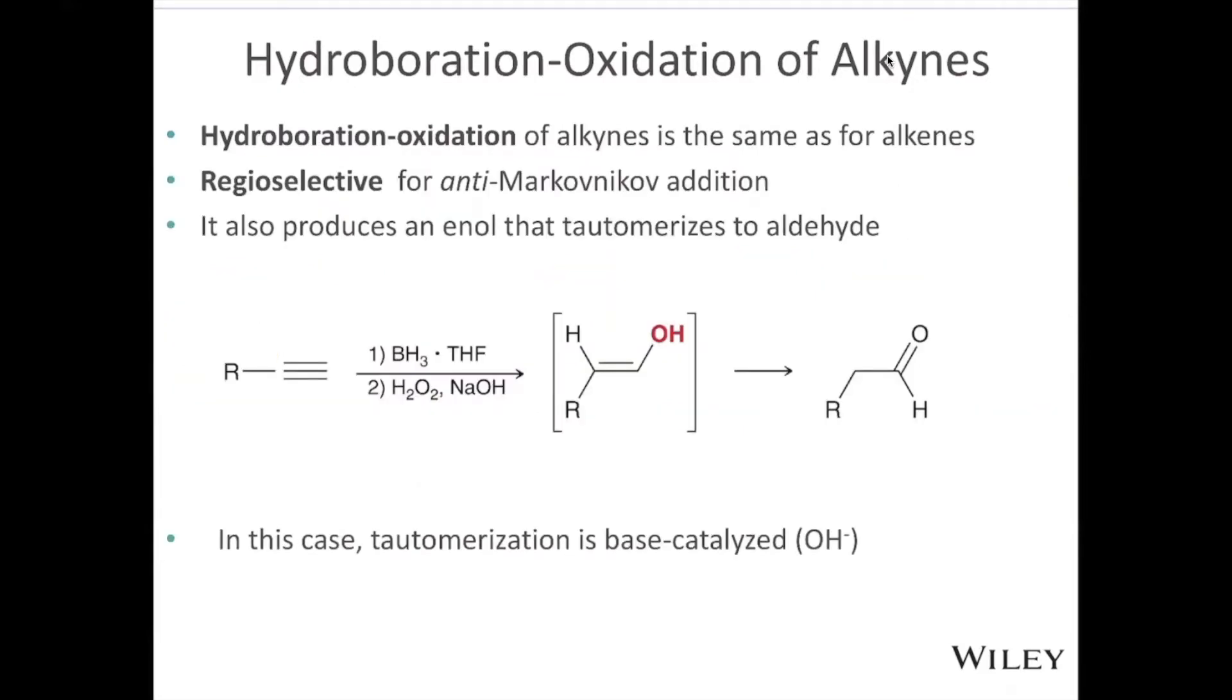Now we know the two ways that we can have tautomerization happen. Let's look at the second hydration of an alkyne reaction. This reaction is hydroboration oxidation, very similar to the one that we use for the alkene. So we have non-Markovnikov or anti-Markovnikov addition, and it produces an aldehyde.